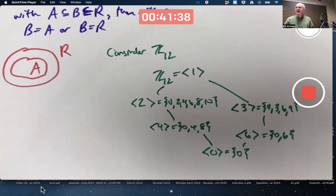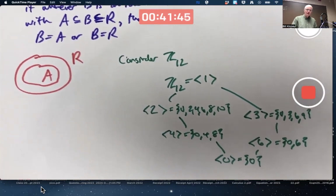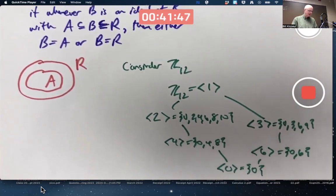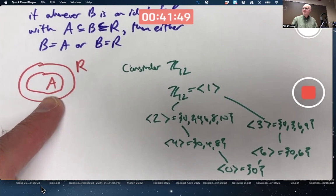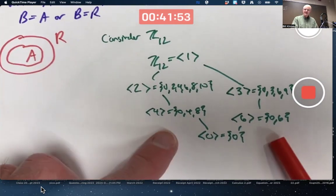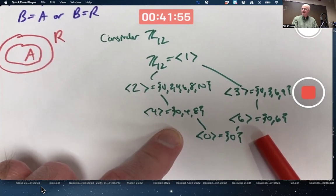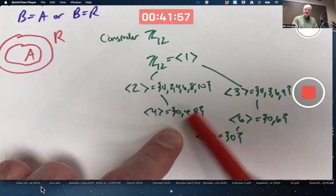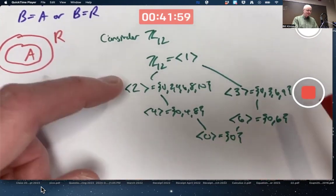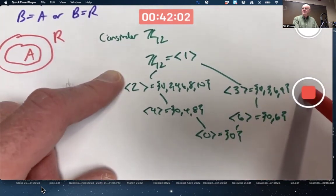What are the maximal ideals in Z12 is the question now. What are the ideals with a property that there's no ideals in between A and R? Certainly not these lower three. For all three of these down here, there are ideals, proper ideals of R in between, so to speak.